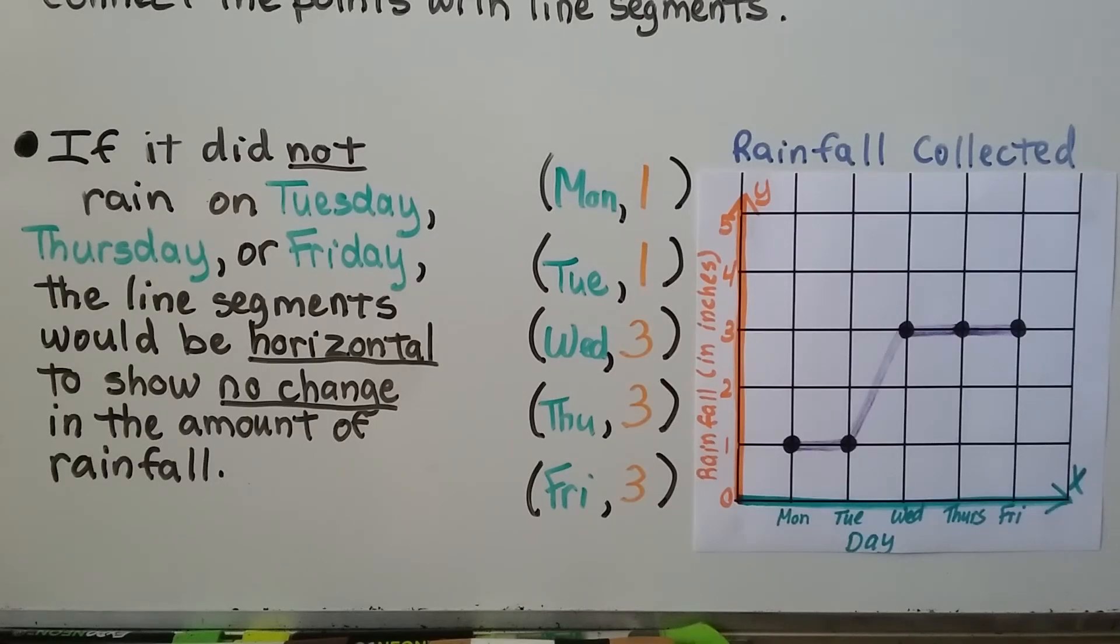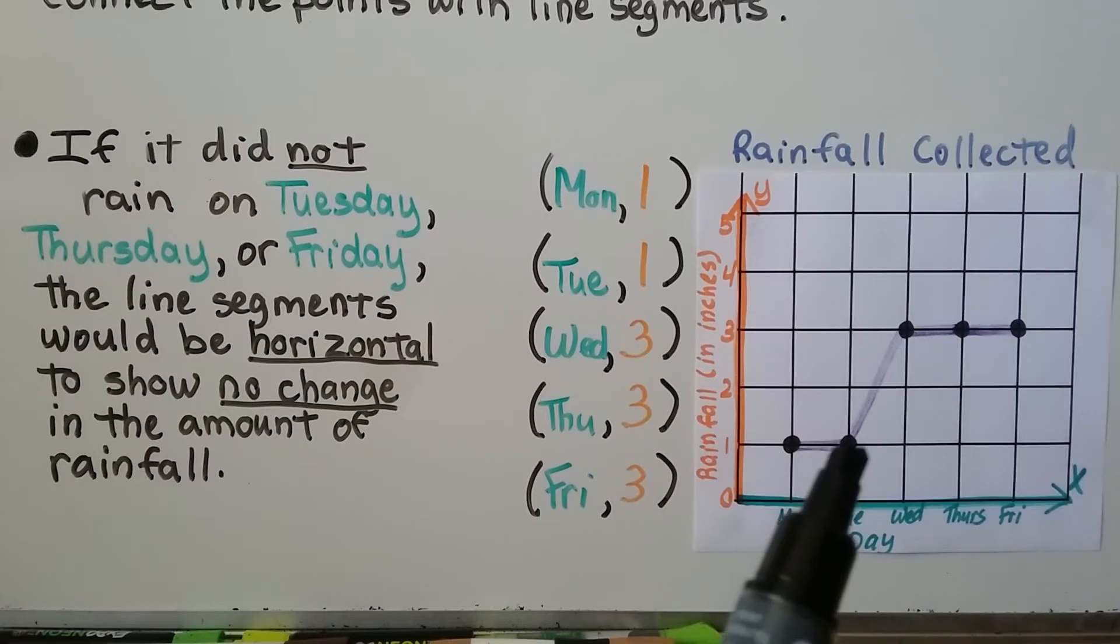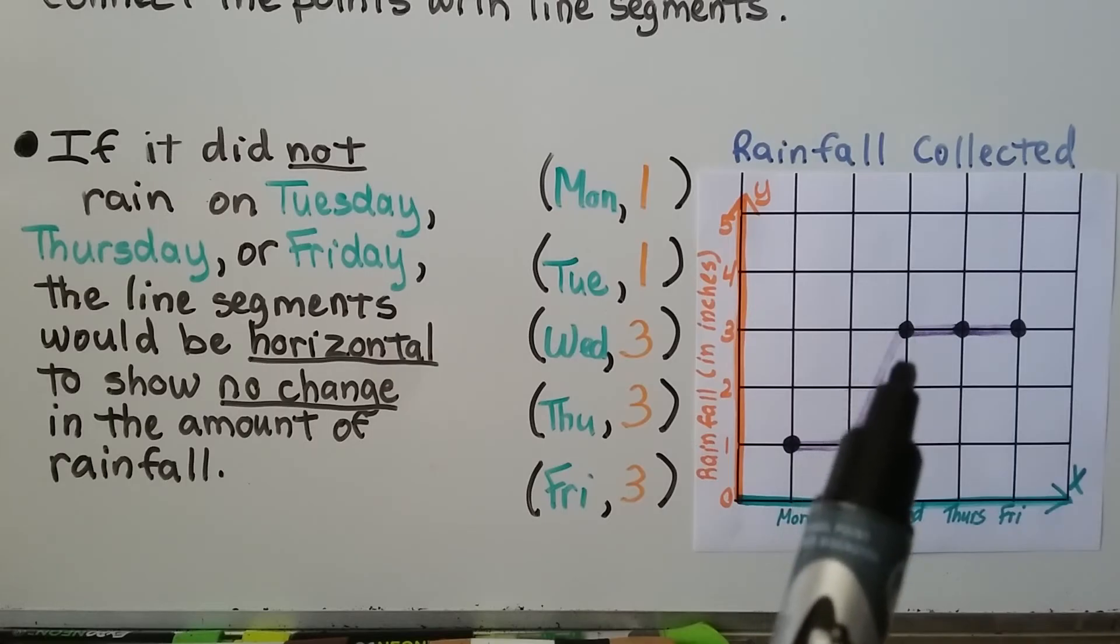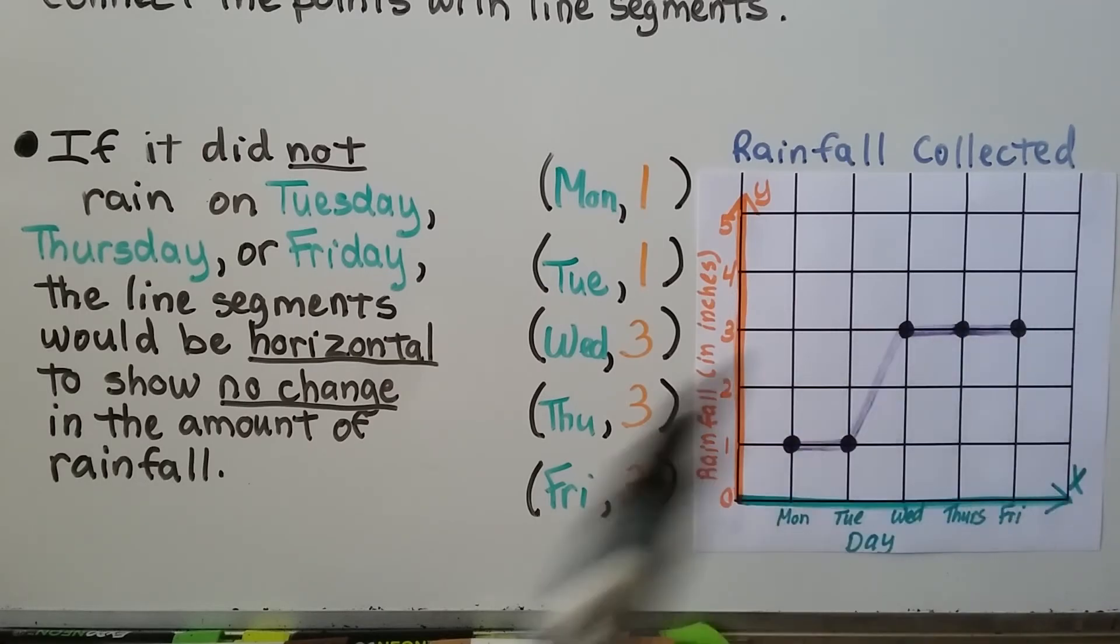If it did not rain on Tuesday, Thursday, or Friday, the line segments would be horizontal to show no change in the amount of rainfall. If it rained one inch on Monday, but then it didn't rain for Tuesday, it would just go straight across and stay at one. For Wednesday, it must have rained because now her rain gauge is filled up to three. And if it stays at three, that means it didn't rain Thursday or Friday.